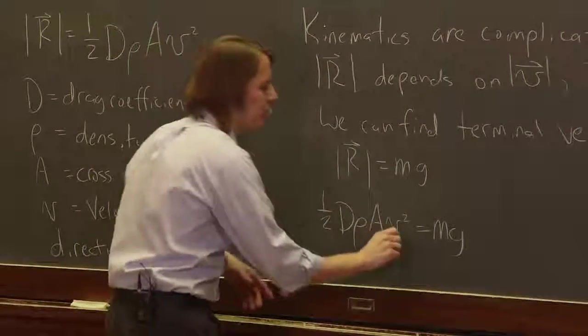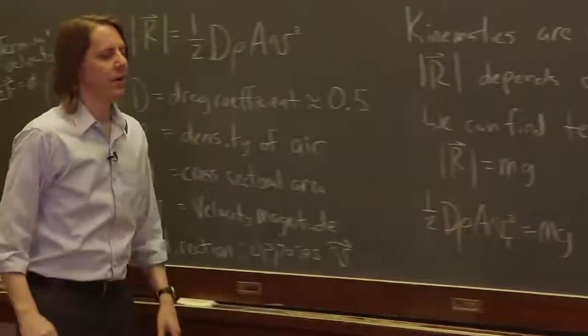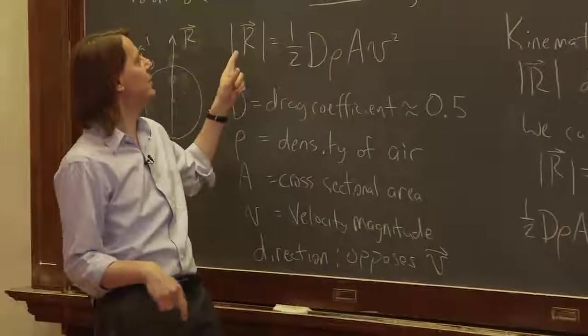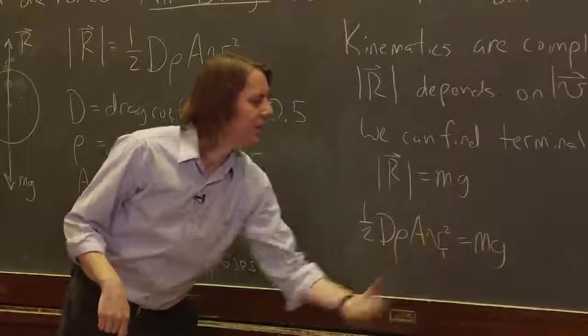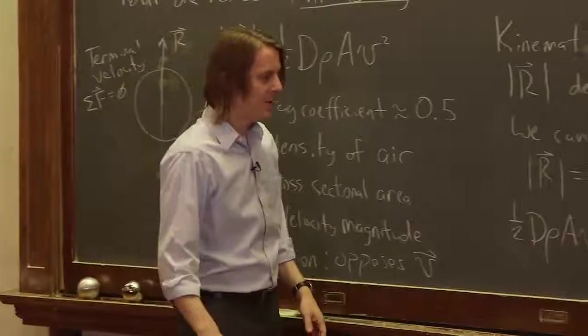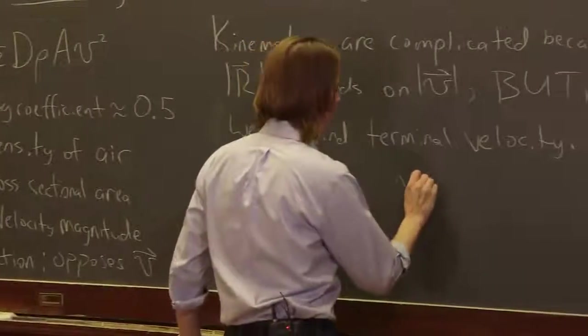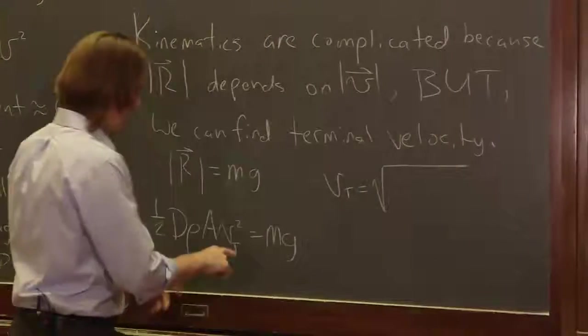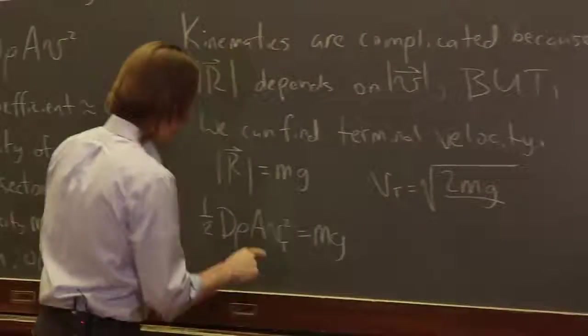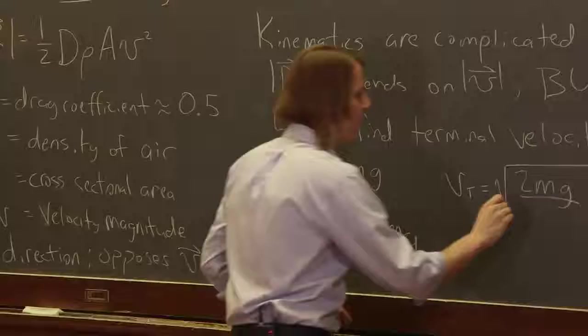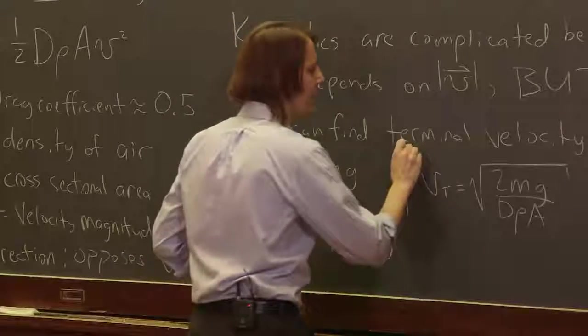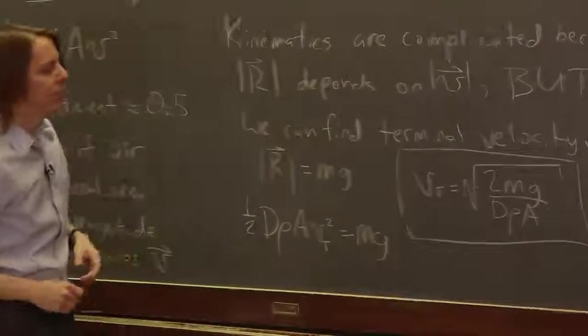We're saying when this happens, that's the terminal velocity, so I'll put a big T right there. It's really a specific velocity. If you flip that around and solve it for vT, you get the square root of 2mg over D rho A, and that gives you the terminal velocity.